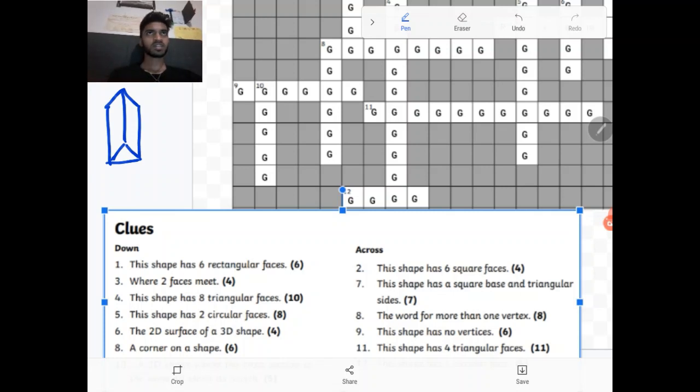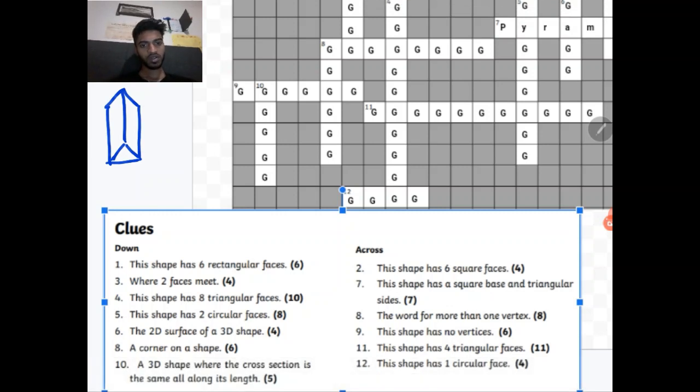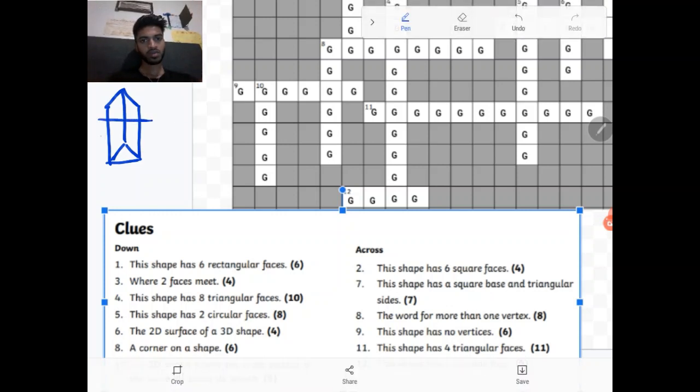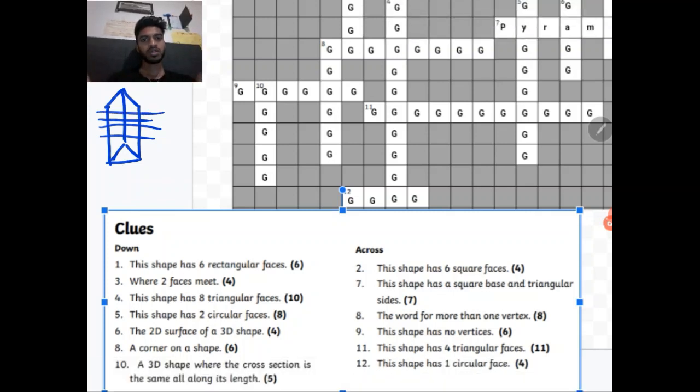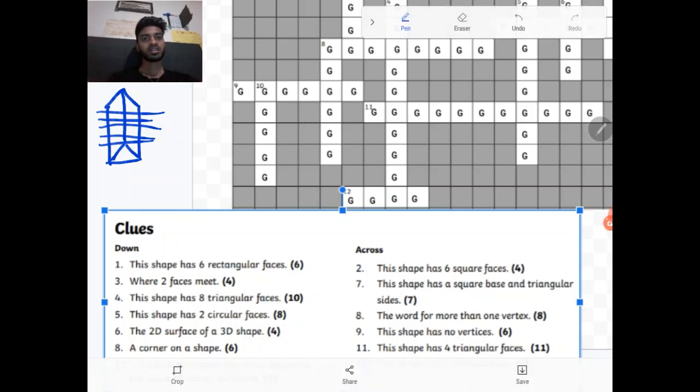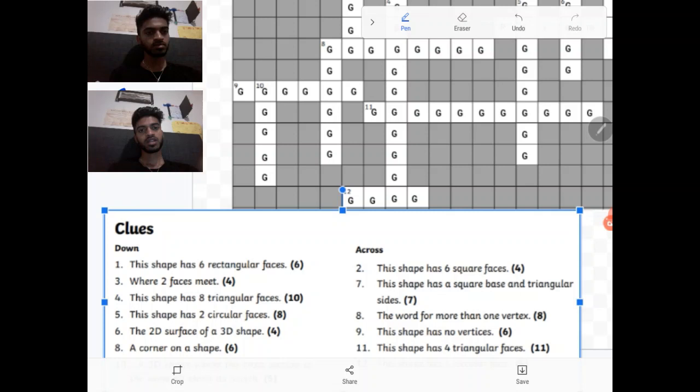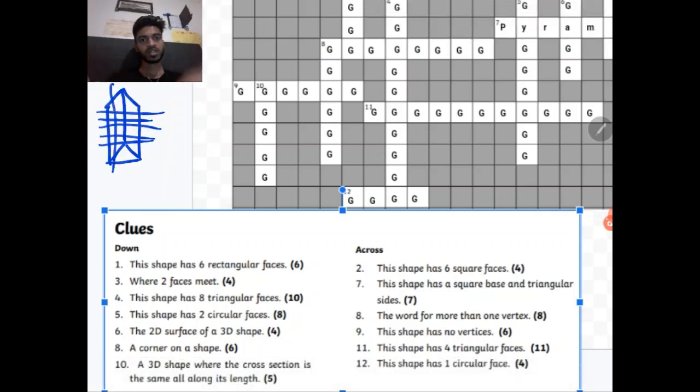And what it means by a 3D shape where the cross section is the same all along its length. What that means is if you made a cross section here along its length or here along its length, doesn't matter where you make a cross section, you'll still get a triangular prism. So it still keeps its shape no matter where you make a cross section along its length. However, so that means that if you did it along its width, then it wouldn't necessarily work. It must be along its length.